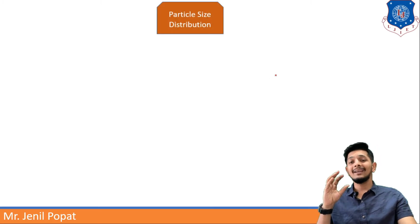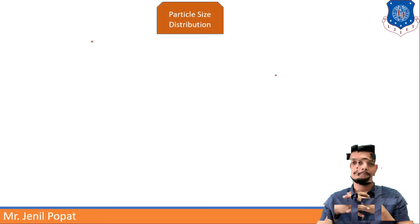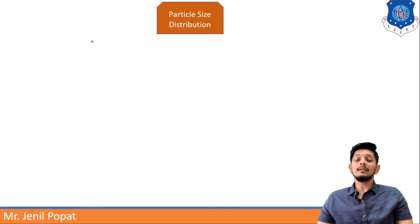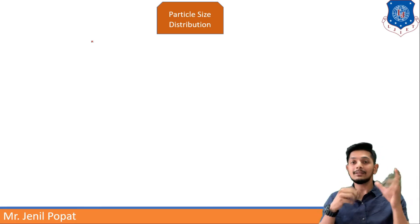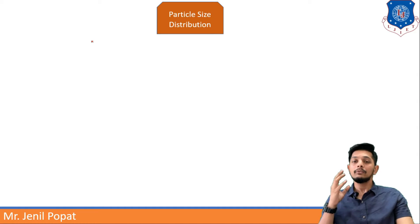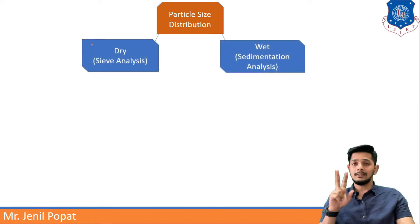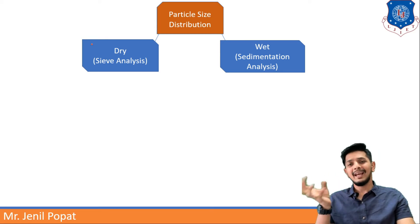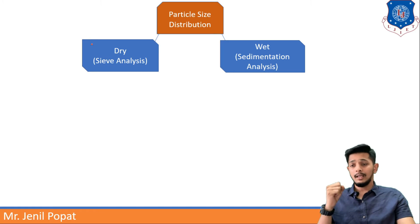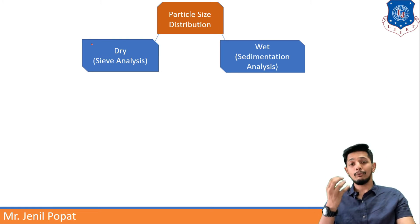Moving forward to particle size distribution — how to distribute them in different sizes? For that there are two basic tests. First is dry and second one is wet. We can say dry analysis and wet analysis. Dry means sieve analysis where wet means sedimentation analysis.